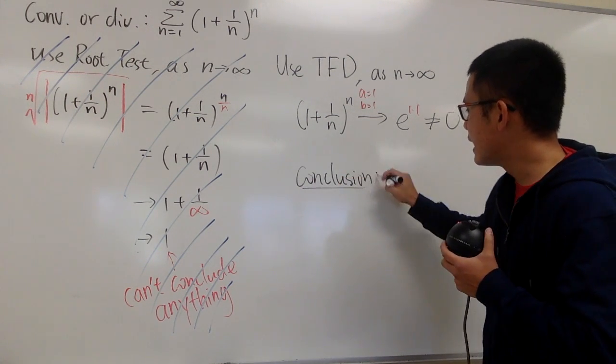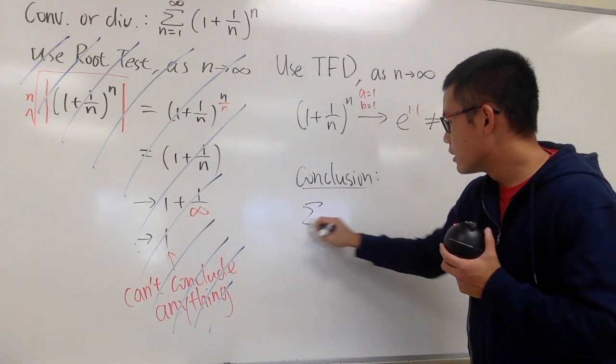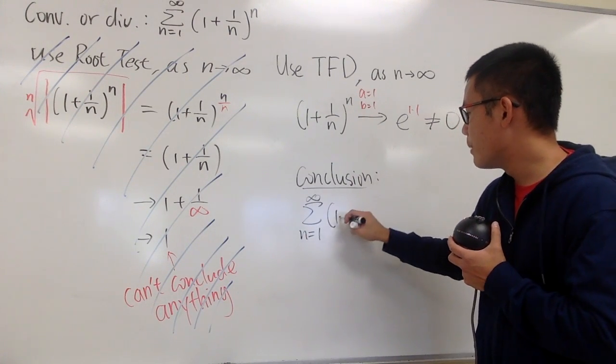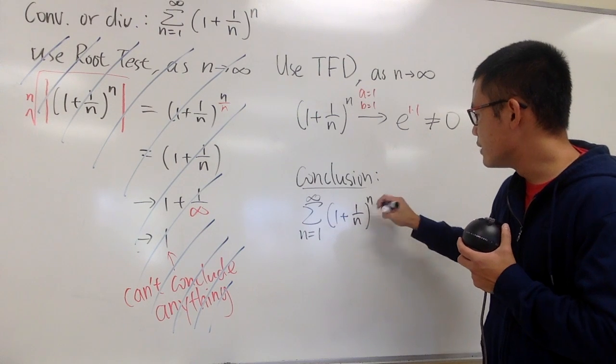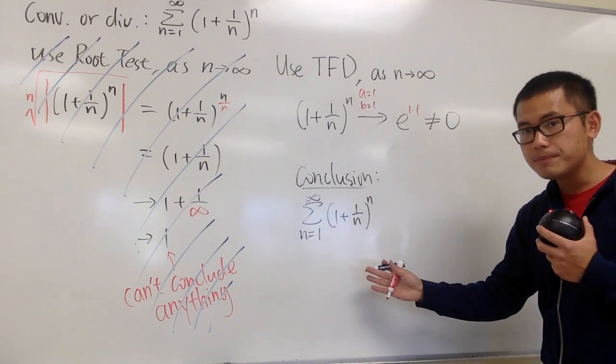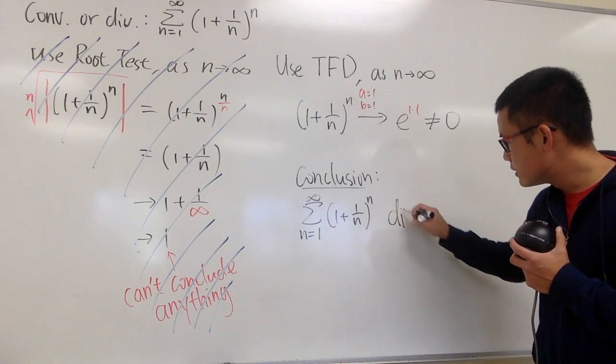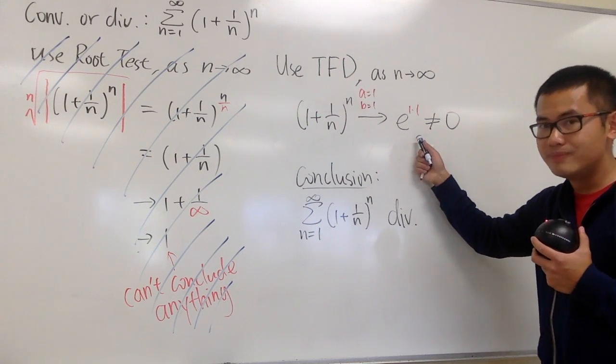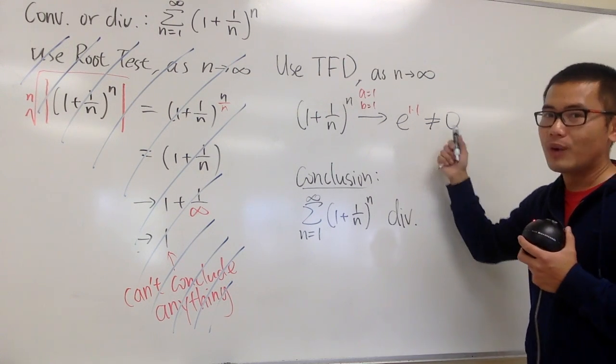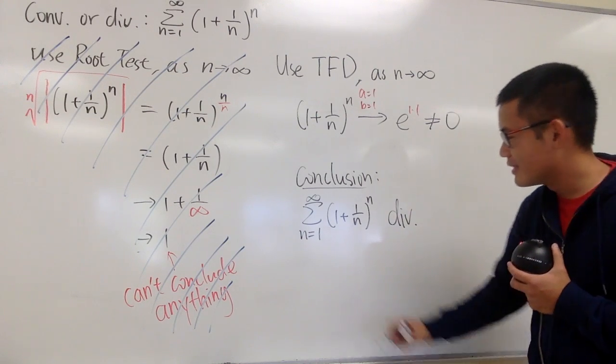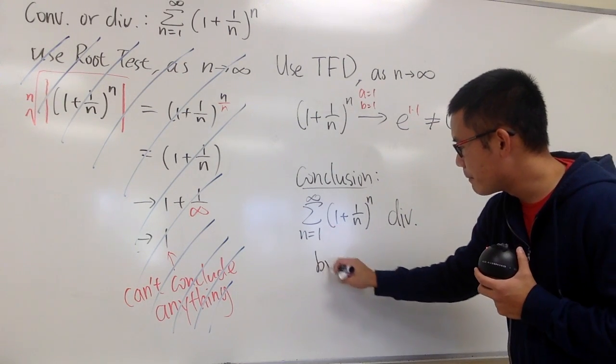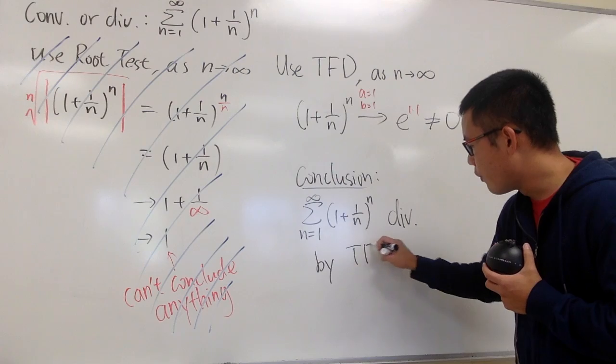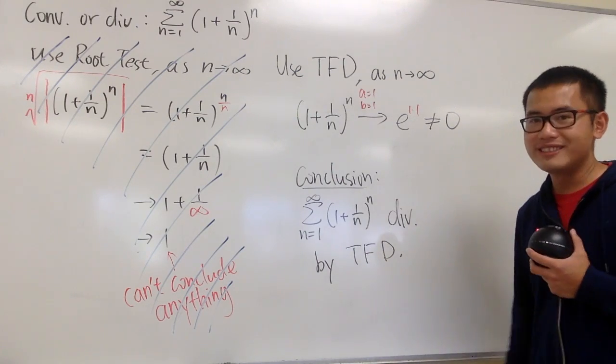So let me write it down. The conclusion is that that series, this sum of when n goes from 1 to infinity, 1 plus 1 over n raised to the nth power, this right here, diverges. Because right here, this limit was not equal to 0, so we get to draw this conclusion. Divergence by the test for divergence.